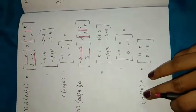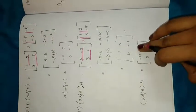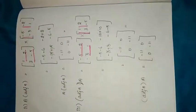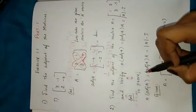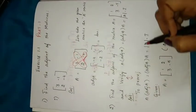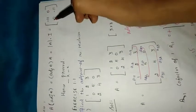So adj(A) × A = [[-11, 0], [0, -11]]. After finding A × adj(A), adj(A) × A, and |A| × I, we can conclude that all three are equal and same, equal to [[-11, 0], [0, -11]]. Hence it is proved.